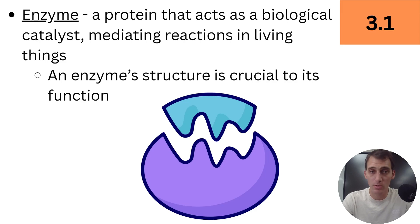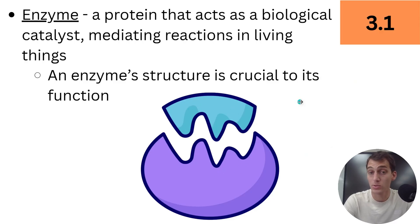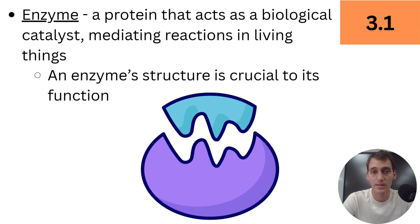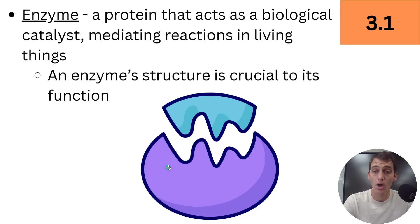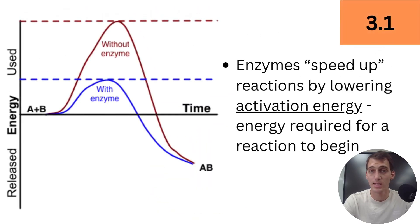Enzymes mediate reactions in living things. This purple image here is an enzyme, and this blue blobby thing is what's going to bind to it. The shape and structure of an enzyme is crucial to its function — that's a big theme in biology: the way something is structured enables it to do its function. This wiggly part of the enzyme, the active site, is ultra mega important when it comes to what that enzyme does.